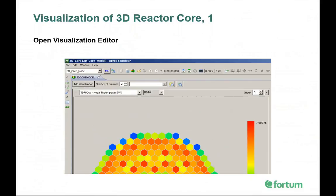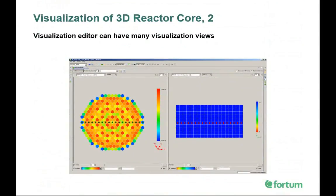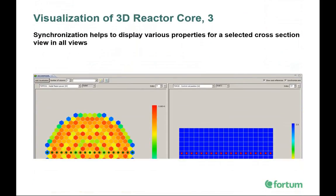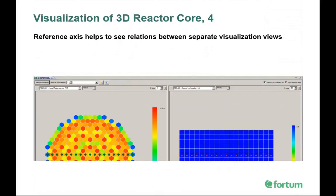3D reactor core visualization in APROS VI happens with the help of the Visualization Editor — click this icon to open it. In the Visualization Editor you can have as many visualization views as you want; in this screenshot we have two. Sometimes it's important to have information in each view related to one particular cross-section, which can be done by selecting the Synchronize Axis option. The Reference Axis option draws axes in each view to show the exact position of cross-section slices.